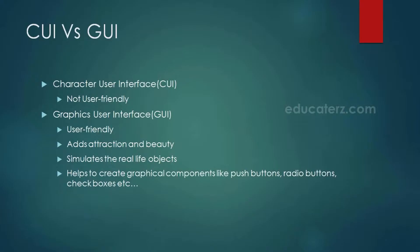GUI has advantages like it is more user friendly — the user need not worry about any commands. It adds attraction and beauty to any application since we add pictures, colors, menus, animations and so on. And it simulates real life objects; for example, a calculator program may actually display a real calculator on the screen. The user feels like he is interacting with the real calculator and can use it without any difficulty or special training. So GUI eliminates the need for user training.